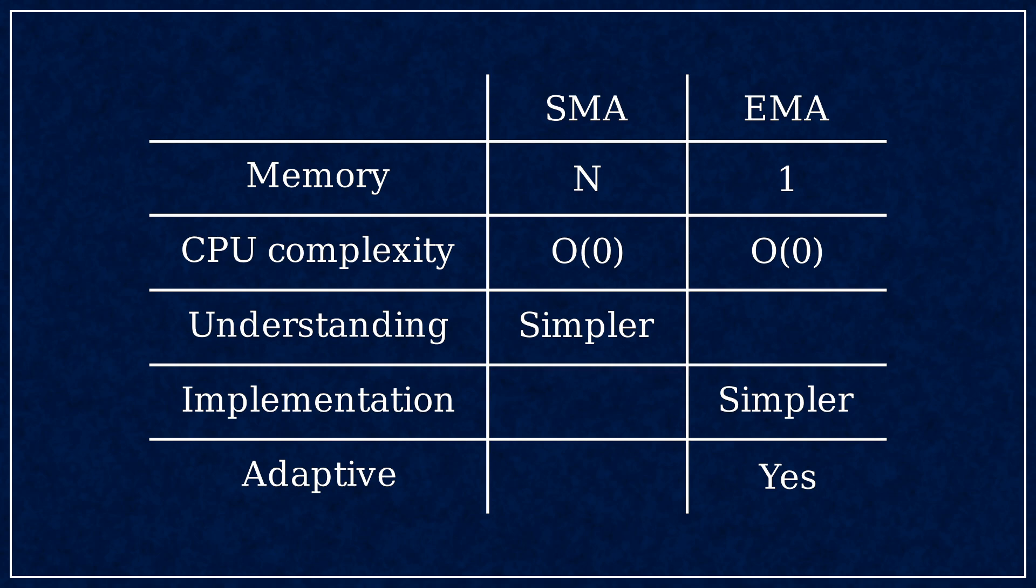The SMA is easier to understand, I give it that. The EMA is easier to implement, it's a one-liner. The last huge benefit of EMA is that it's adaptive. You can easily change the time constant online while the filter is operational. I wouldn't know how to do that with the circular buffer of an SMA, feels rather complicated.